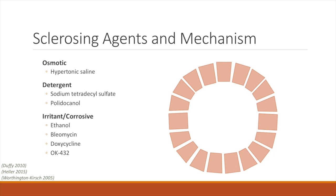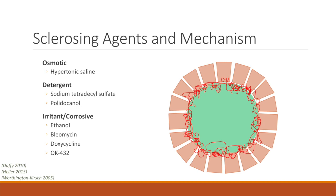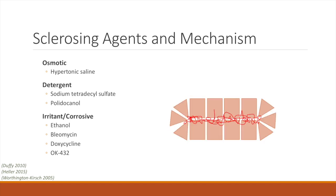A number of different sclerosing agents have been investigated, and although these agents have different primary uses, their sclerosing mechanism is similar. When introduced into the vessel or space, the sclerosing agent results in a non-specific inflammatory reaction, which eventually results in irreversible endothelial cell damage. This reaction eventually leads to fibrosis and obliteration of the space. The mechanisms can be grouped into three categories: osmotic, detergent, and irritant.